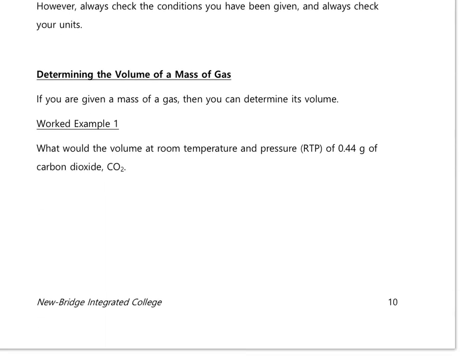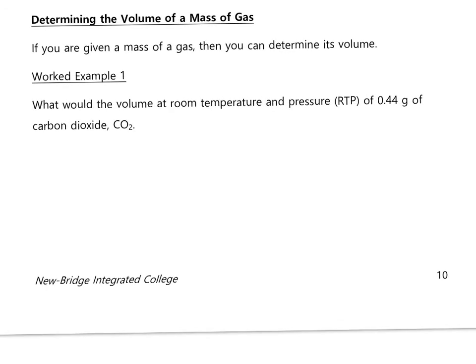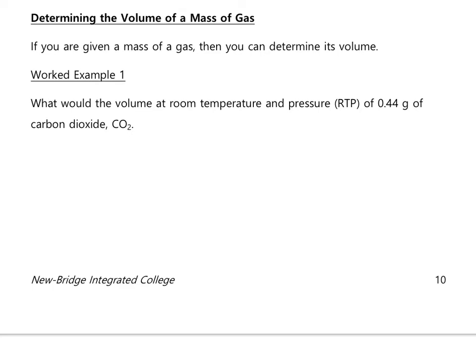Let's look at some examples, starting with the simplest form: determining the volume of a particular mass of gas. We'll always use volume = n × Vₘ — the volume that a mole of that gas will occupy. In general these are given at RTP, so we use volume = n × 24. But to use this we need a value for the number of moles, so if we're given a mass first, we must convert that to moles first.